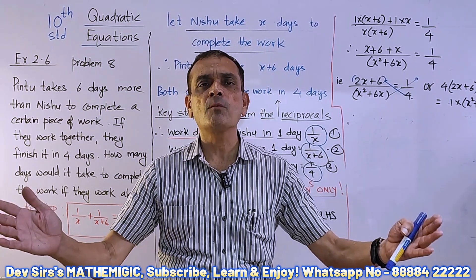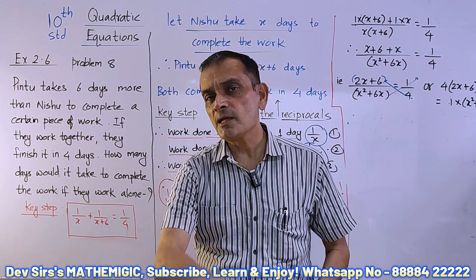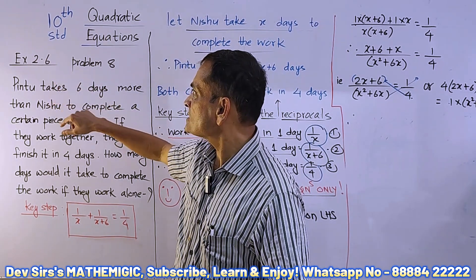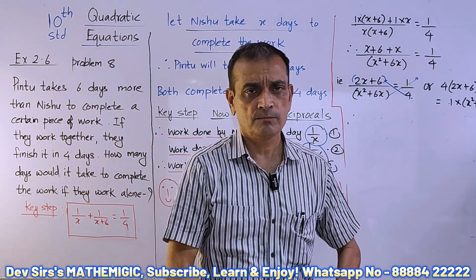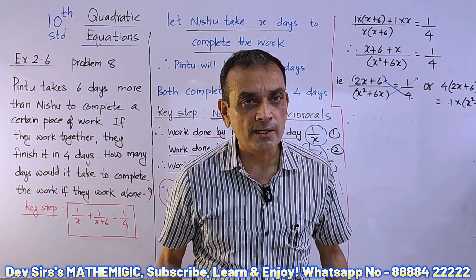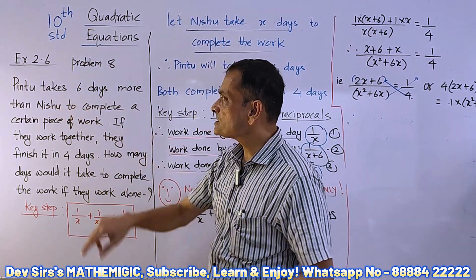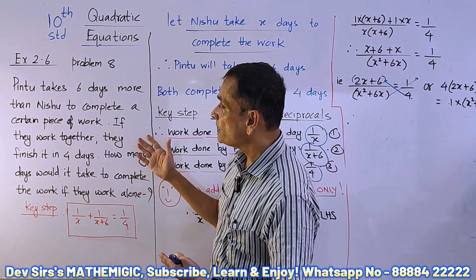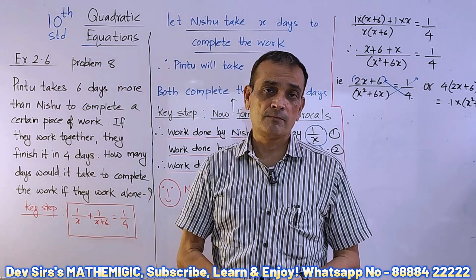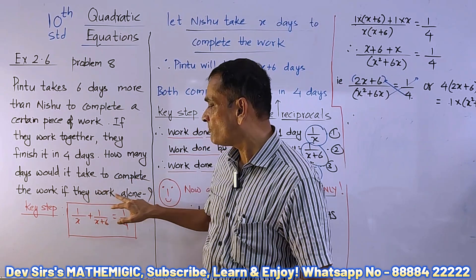Let us straight away go to today's problem. It is a sum from the quadratic equations chapter. There are two similar sums — one is from Exercise 2.6, problem number eight, and one is from the problem set. Let's see: Pintu takes six days more than Nishu to complete a certain piece of work. If they work together, they finish it in four days. How many days would it take to complete the work if they work alone?